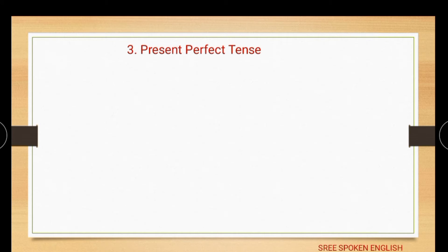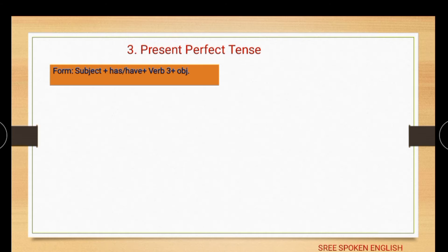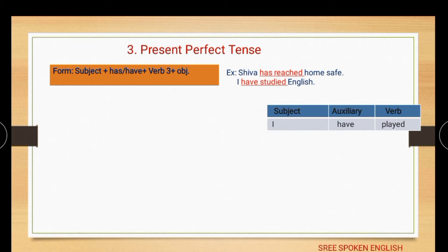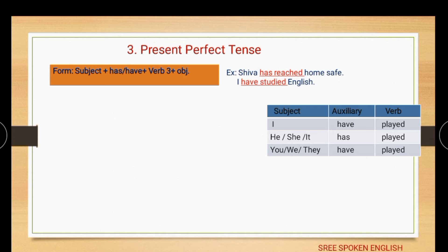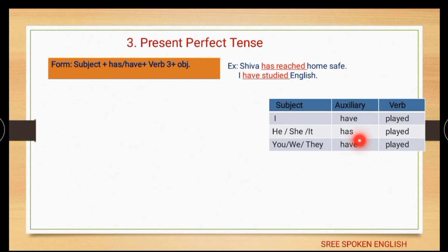The third subcategory: present perfect tense. The form is: subject + has/have + verb third form + object. Example: 'Shiva has reached home safe.' Another example: 'I have studied English.' In the chart: 'have' is used for I, you, we, they — 'I have played', 'you have played'; 'has' is used for he, she, it — 'he has played', 'she has played', 'it has rained'.